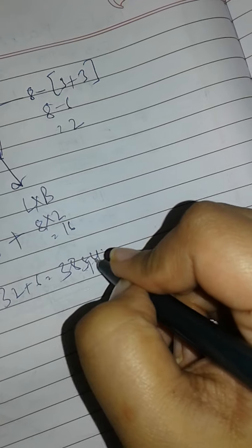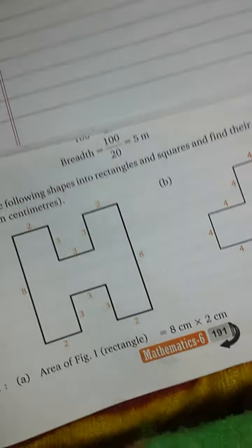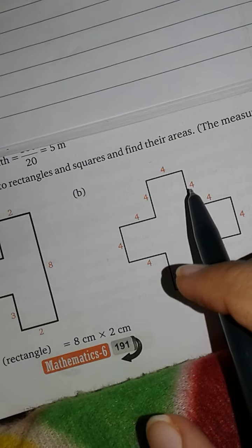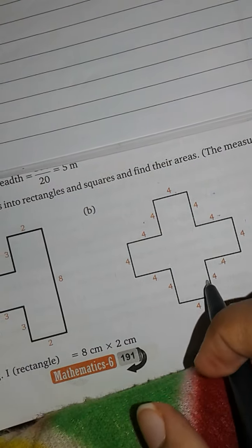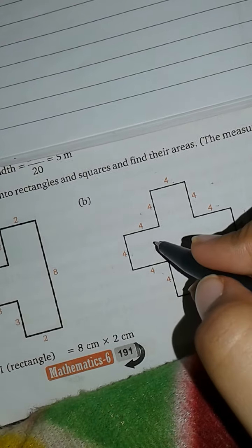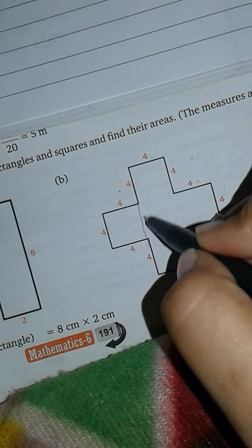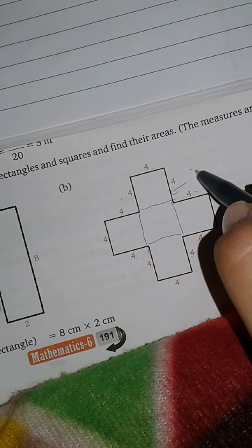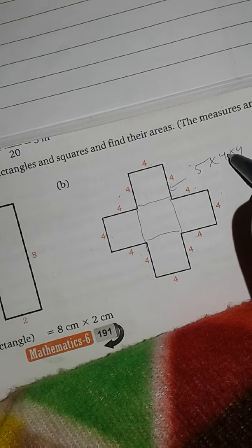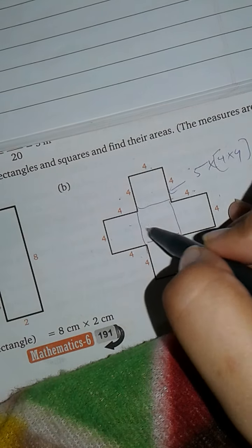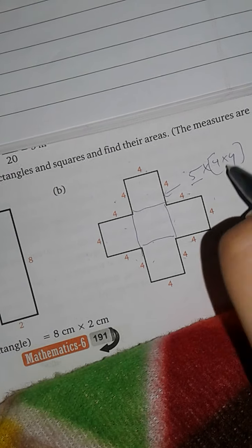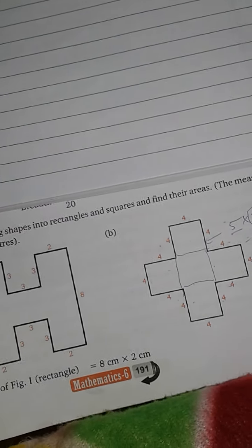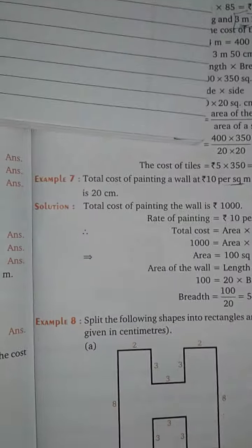So the area of the H figure is 38 square units. For the second part, all the shapes are squares with the same side. There are 5 squares, each with side 4. Area of each square is 4 into 4 equals 16, and 5 times that gives 80 square units.